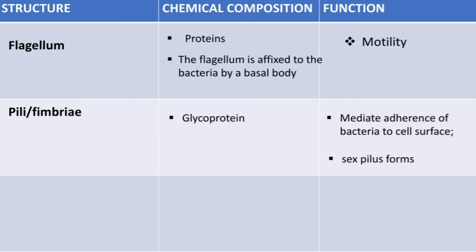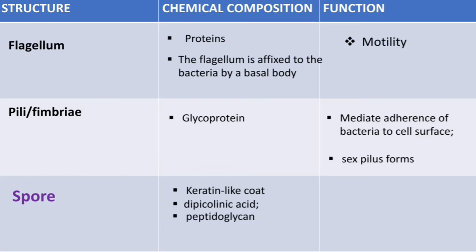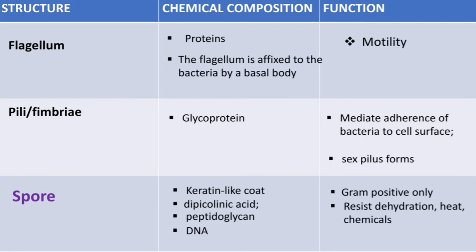The last structure is the spore. The chemical composition of spores includes a keratin-like coat, dipicolinic acid, peptidoglycan, and the actual DNA. Spores are found only in some gram positive bacteria and they are resistant to dehydration, heat, and chemicals.